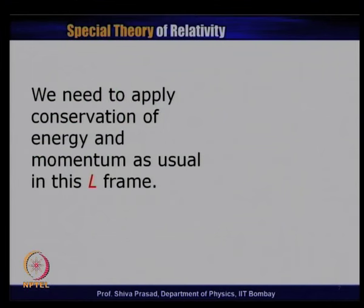Let us first attempt to solve it in the L frame — the laboratory frame as described — and discuss what difficulties arise. We must apply conservation of energy and conservation of momentum. The energy has been given as 3M₀c², so we need to find the initial momentum of the particle. Since E = γM₀c² and the energy is 3M₀c², it is clear that γ_L = 3.